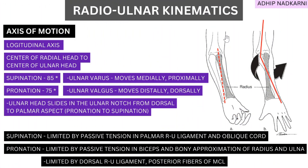To summarize: at the radio-ulnar joint the axis is longitudinal, passing through the head of the radius and ulna. The movements are supination and pronation of around 85 and 75 degrees respectively, and we covered the structures that limit this motion. In the next video we will talk about the muscles and kinetics of the radio-ulnar joint, so stay tuned — thank you for watching.